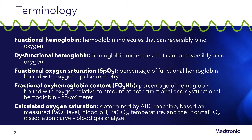Functional oxygen saturation is the percentage of functional hemoglobin bound with oxygen as measured by pulse oximetry, whereas fractional oxyhemoglobin content is the percentage of hemoglobin bound with oxygen relative to the amount of both functional and dysfunctional hemoglobin. This is measured by a co-oximeter.